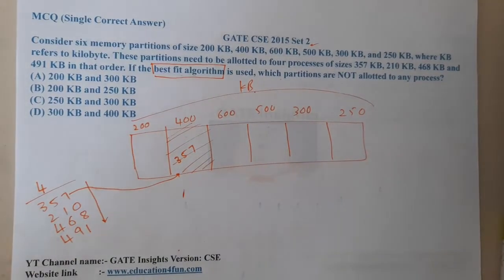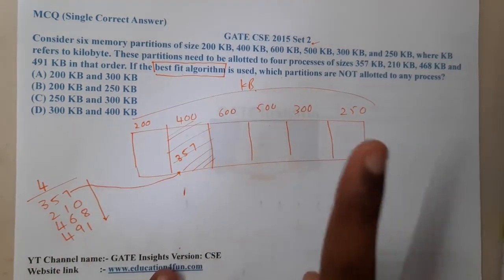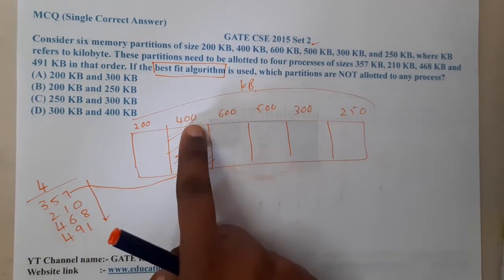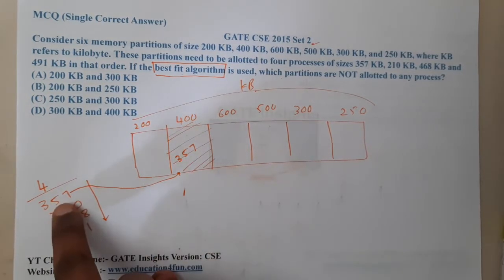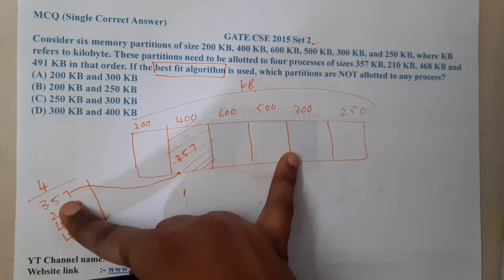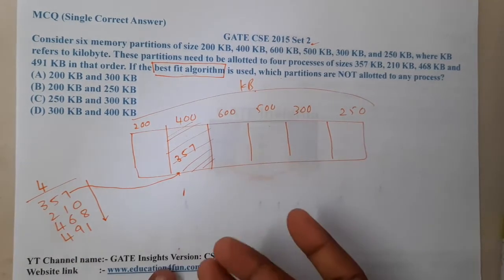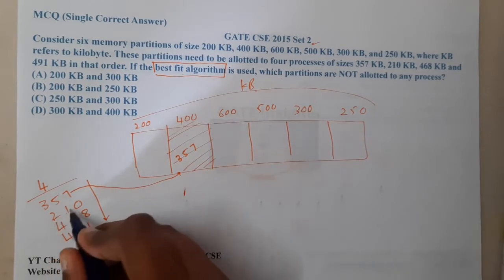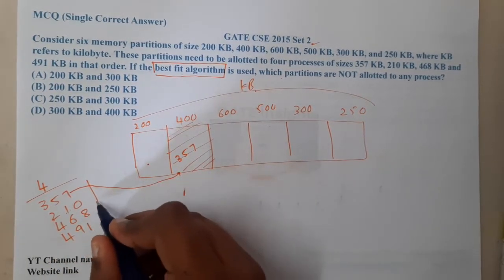Which is the best spot for 210? One silly mistake I made: 357 the nearest will be 400 only because we can't fit 357 in 300. So 210 cannot fit here; the nearest closest one will be 250, so 210 will fit here.